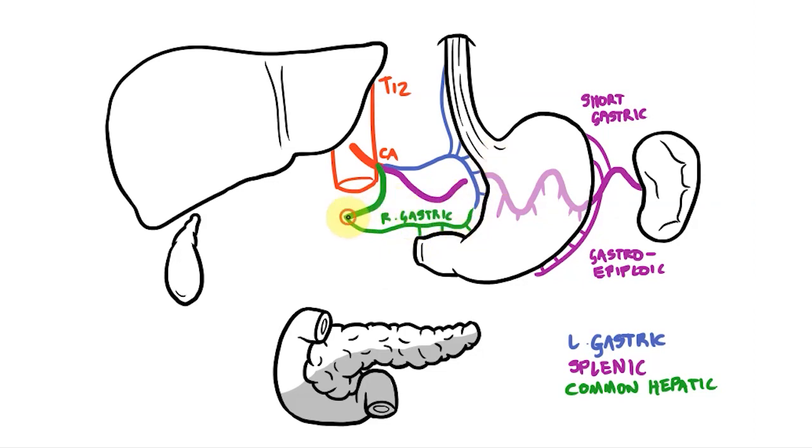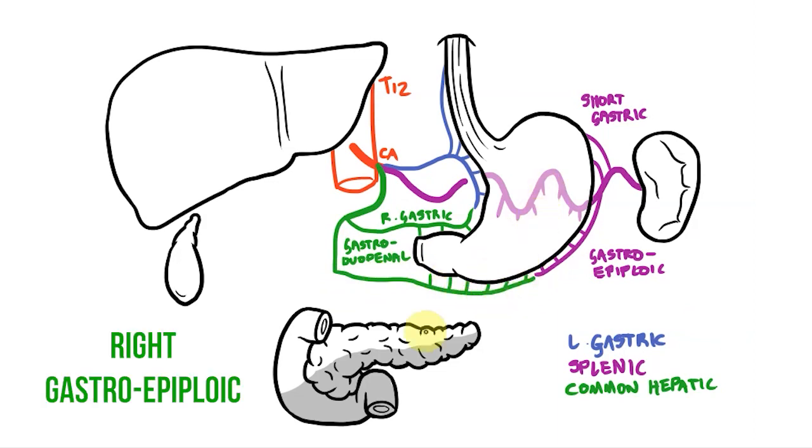The second branch supplies the stomach and duodenum, so we call it the gastroduodenal artery. This heads down here and divides into two branches. One supplies the greater curvature of the stomach as the right gastroepiploic artery. And we can now see that the stomach receives an extensive blood supply from all three branches of the celiac axis.